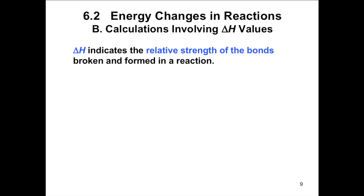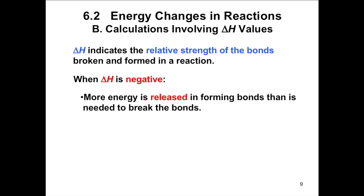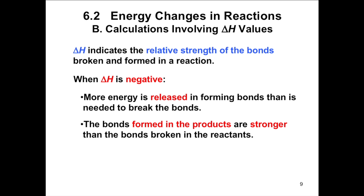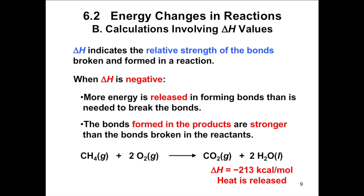Most reactions involve breaking and forming more than one bond. The heat of reaction measures the difference between the energy needed to break bonds in the reactants and the energy released from bonds formed in the products. Delta H indicates the relative strength of the bonds broken and formed in a reaction. When delta H is negative, more energy is released in forming bonds than is needed to break them, meaning the bonds formed in the products are stronger than the bonds broken in the reactants.